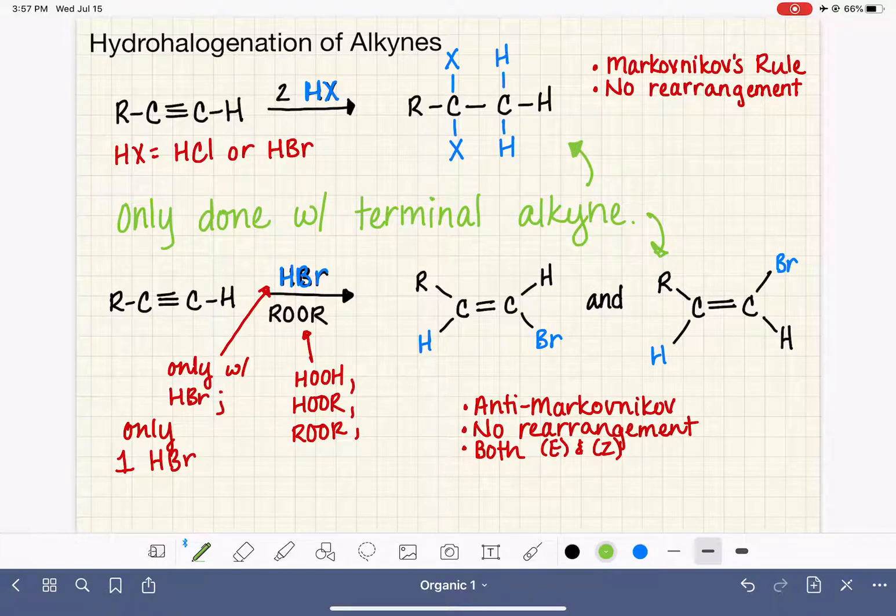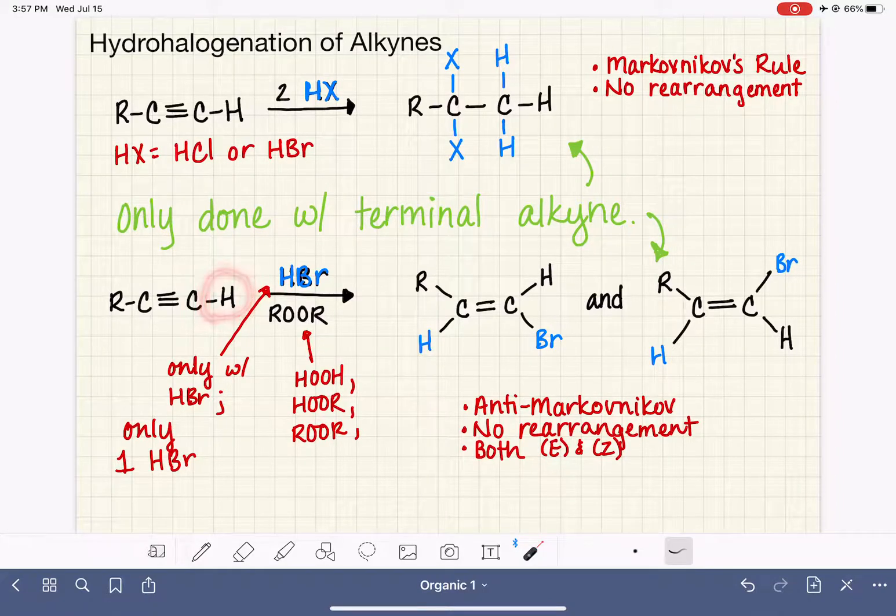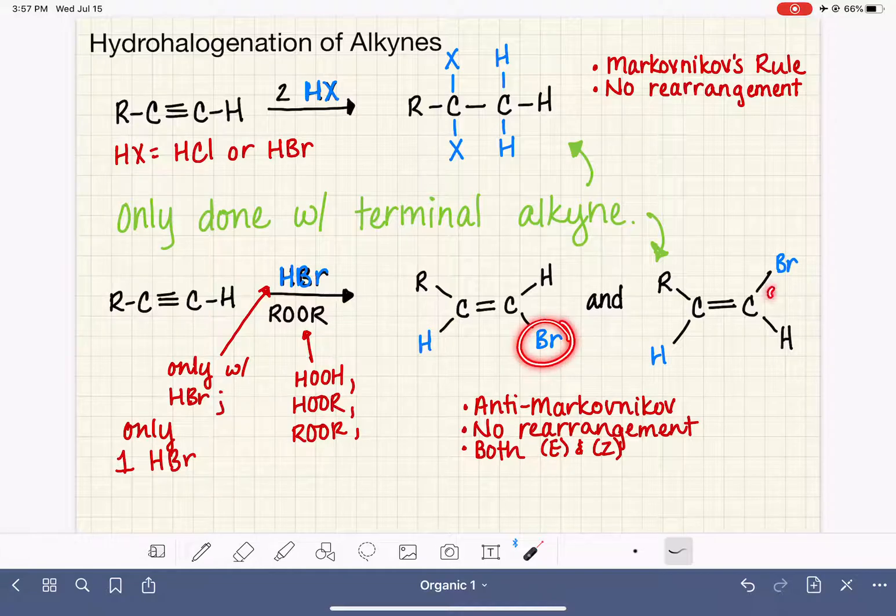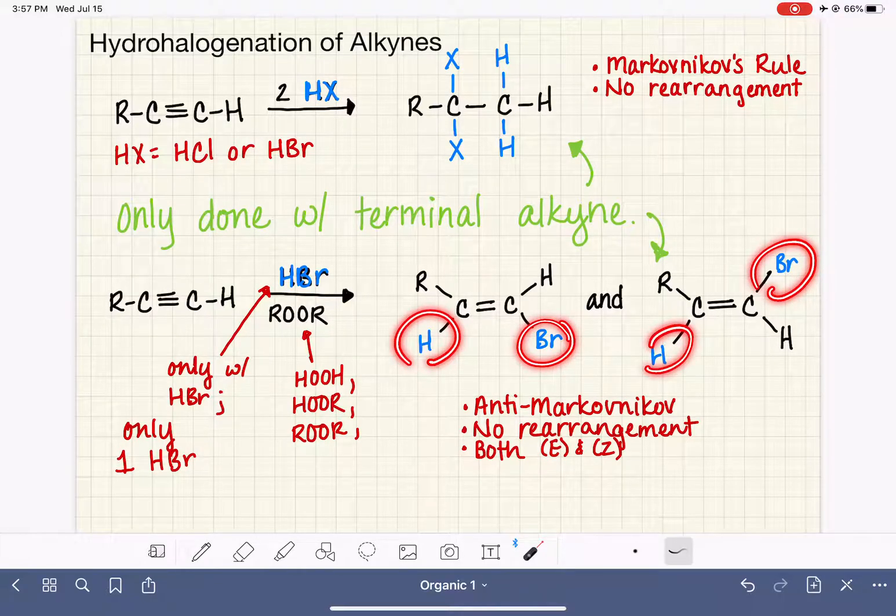And also, for the same reason, only done in the lab, we only do this with terminal alkynes because we want to have a hydrogen present to help control the placement of the bromine and the incoming hydrogen in the product.